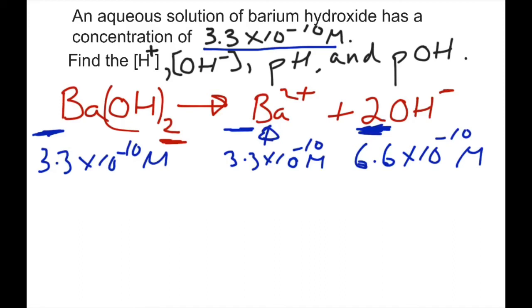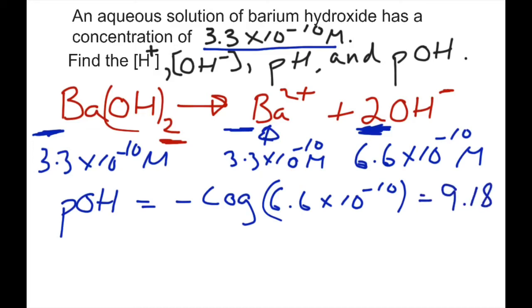Now, once we know one of these guys, we can go in a number of directions. What's the simplest thing we can find? We can find POH, for example. So, POH, which is equal to negative log of OH minus will be equal to negative log of 6.6 times 10 to the negative 10. And when you take that negative log of that guy right there, you should get something around 9.18. So, that will be our POH. So what we just did, we calculated our OH minus, we got our POH from that, taking the negative log of that.